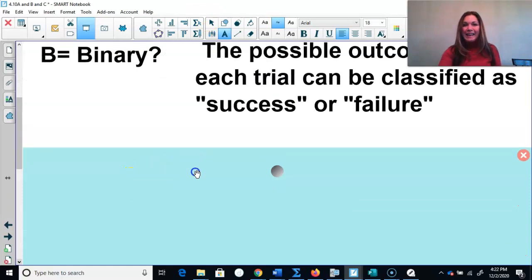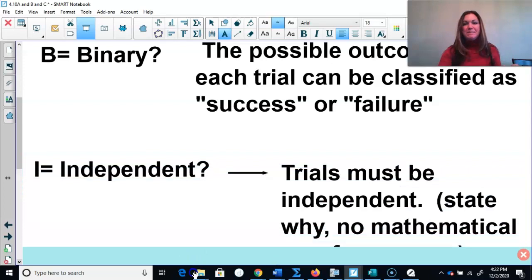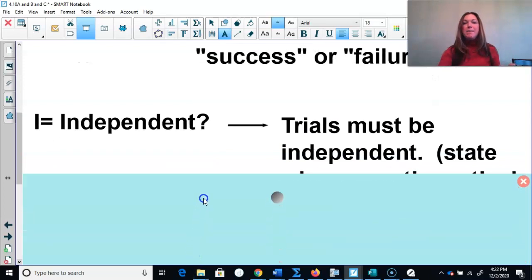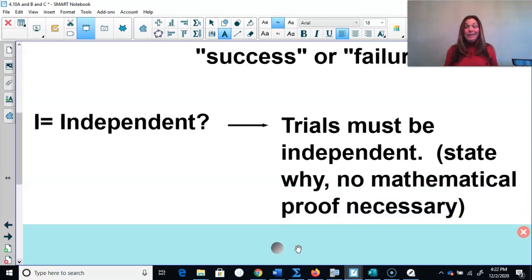Next, I - that stands for independence. Trials must be independent of each other. In order to check this, you don't have to check it like we did in the previous unit. All you have to do is state that the trials are independent of each other. For example, like flipping a coin, each coin - if I flip heads on one coin, that has no bearing on if I flip heads on the next coin. Those trials are independent. If I make one basket, that has no bearing on if I miss or make the next one. Those trials are independent of each other.